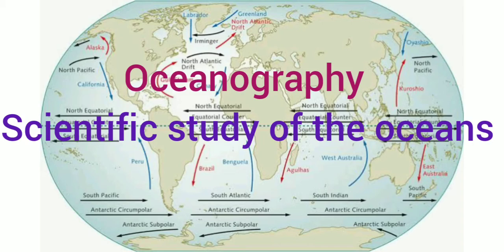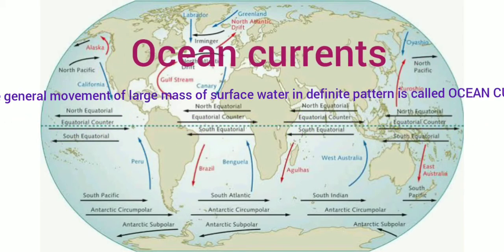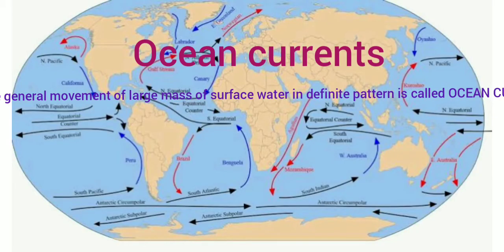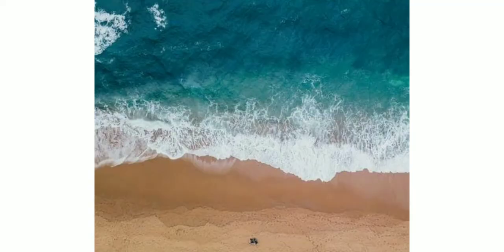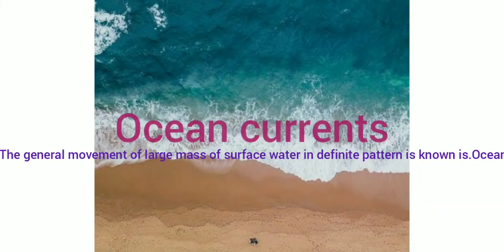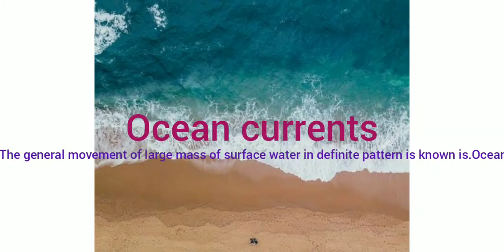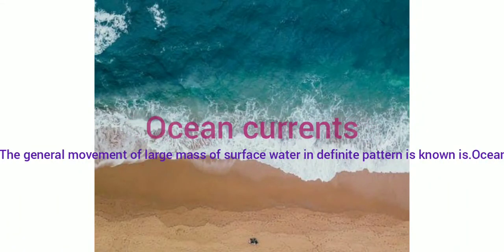Let's start with ocean currents. Ocean currents are the continuous flow of a huge amount of water in a definite direction. They are like river flow in oceans, representing a regular volume of water in a definite path and direction. In short, the general movement of a large mass of surface water in a definite pattern is called ocean currents.